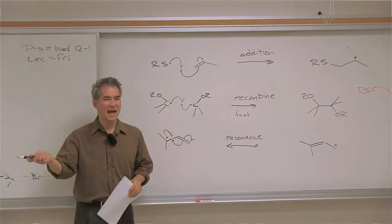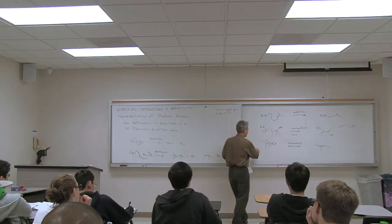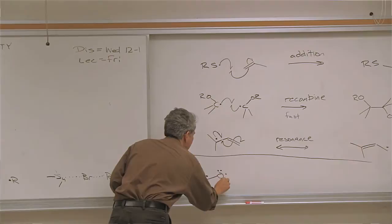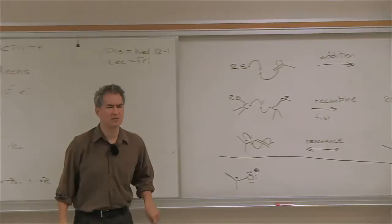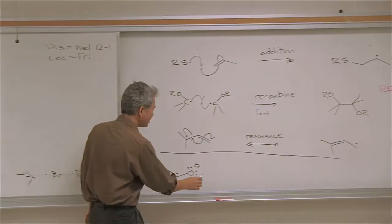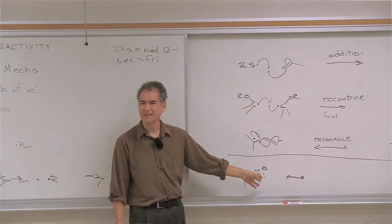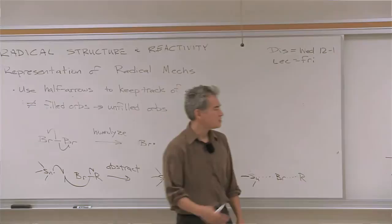There is one important type of resonance where these half arrows are no good, and it's going to frustrate you infinitely. One of the most important types of stabilized radicals are radicals that are stabilized by adjacent lone pairs. Here's an example of a ketyl radical — it looks like it was derived from a ketone with an extra electron — and an important resonance structure for these types is when a lone pair next door, such as an amino group, donates into that radical center and stabilizes it.